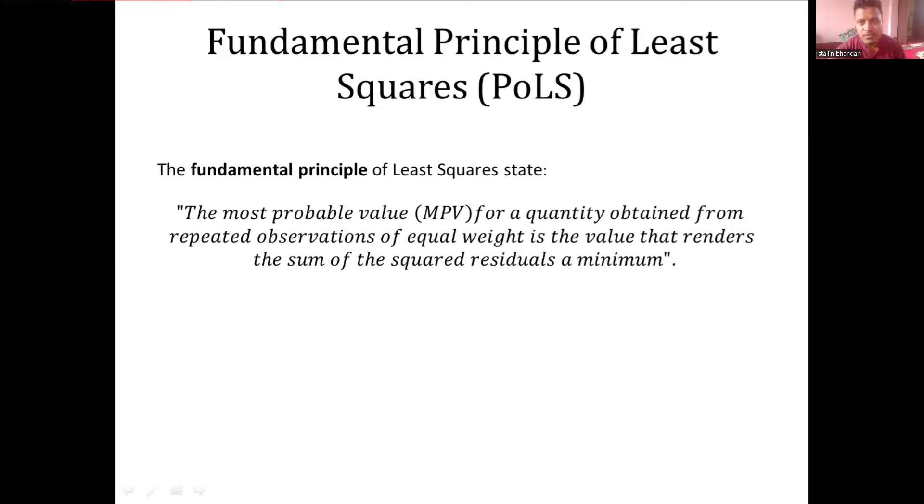If we repetitively observe or measure the quantity and consider that each observation has equal weight, then the most probable value for the quantity is the value for which the sum of square of residuals is minimum.